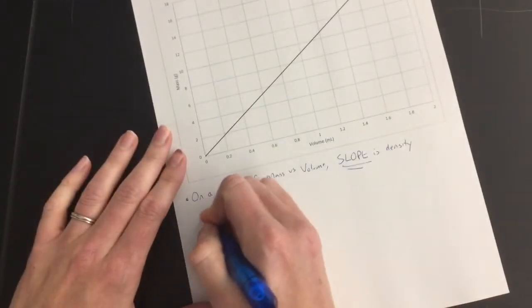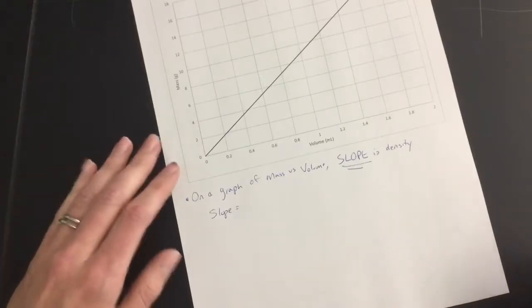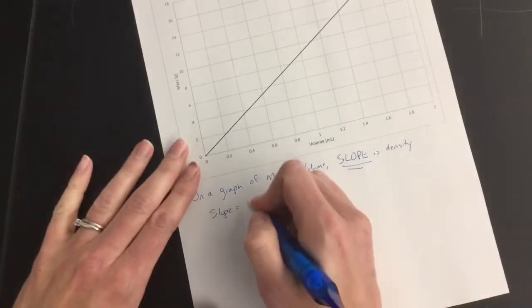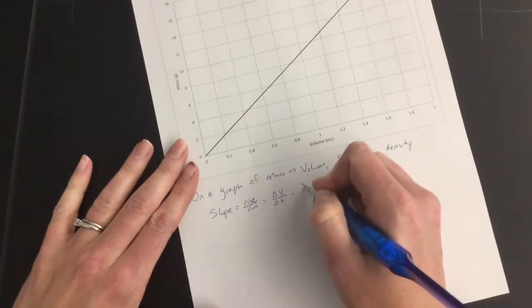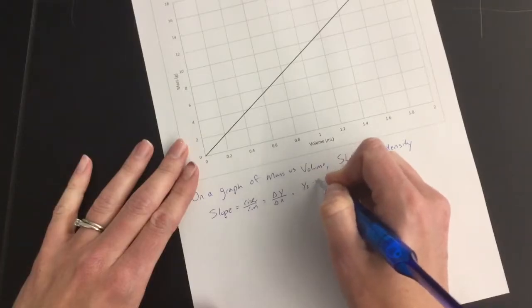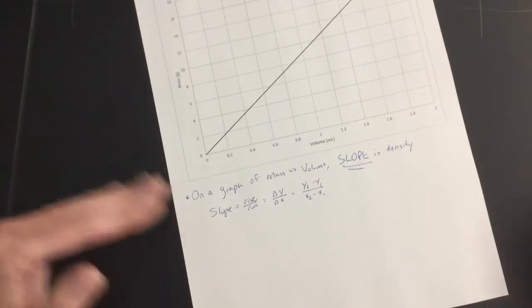How do we find the slope? Now this is the same exact thing from math class, so everything you learn in math class works here too. We're just going to do rise over run, sometimes people write it change in y over change in x, or y2 minus y1 over x2 minus x1. It doesn't matter how you write it, it's all the same thing.